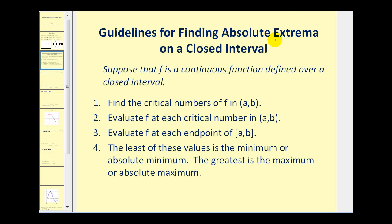The procedure for finding the absolute extrema on a closed interval is as follows. Number one, we find the critical numbers of the function in the open interval. Then we evaluate the function at each critical number. Then we evaluate the function at the endpoints — it's important that we do not forget about the endpoints. The least of these y-values is the absolute minimum, and the greatest is the absolute maximum. Let's go ahead and give it a try.